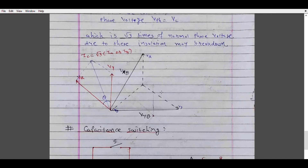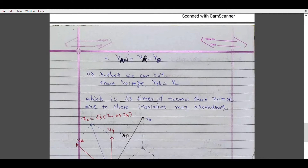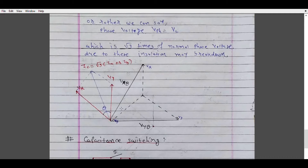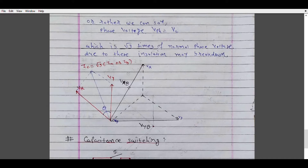Let us draw the vector diagram for this condition. In the healthy phase condition we have Vr, Vy, and Vb. To find VRN, which is Vr minus Vb, we do the vector sum and it gives us Vrb. Similarly we can find Vyb. The charging current in the R phase leads Vrb by 90 degrees, giving us Ir, and the charging current in the Y phase leads Vyb by 90 degrees, giving us Iy.